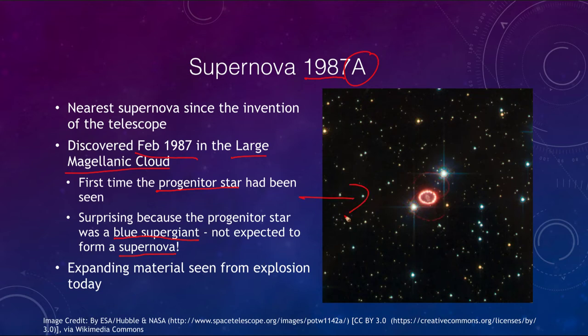We can see in the Hubble Space Telescope image where the material is still beginning to expand. This is much more recent than the other two supernovae that occurred nearly a thousand years ago, so it is still just beginning to expand outward. Astronomers will continue to map it over the coming decades to really understand this supernova.